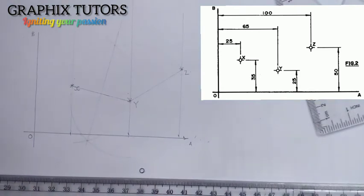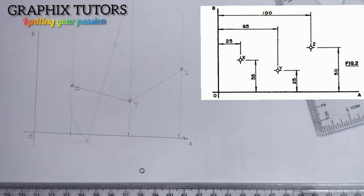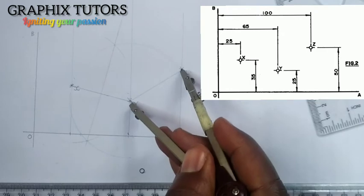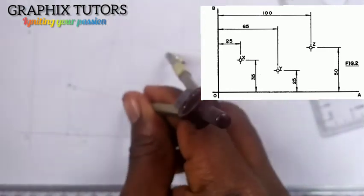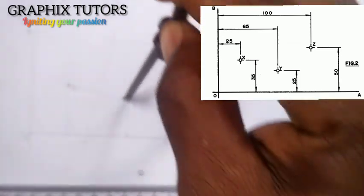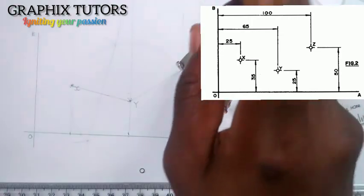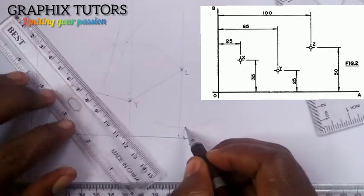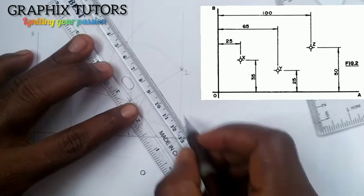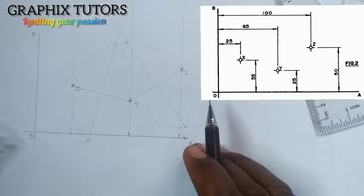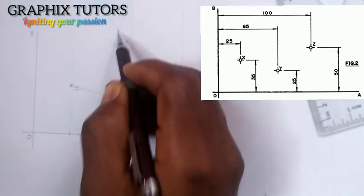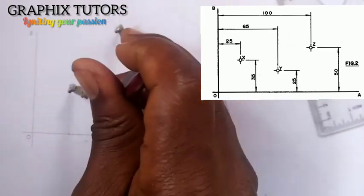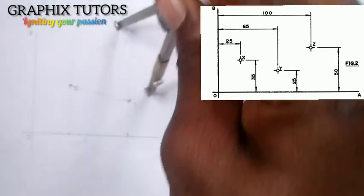Now do the same thing for Z and Y. Place the compass at points Z and Y, and with the same radius strike arcs upward and downward. Then take the same radius to Z, strike up and down. Where these two perpendicular bisectors meet, that intersection is the center point. Place your compass at this center point, take the radius to point X, and draw your arc.